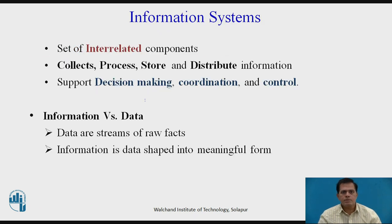In Information Systems, we relate a set of interrelated components which work together to perform a particular task. Information Systems collect, process, store and distribute information to various business persons for their use in the future. Information Systems also support decision making, coordination and control, where people act on such information to provide business rules and business etiquette to business people.